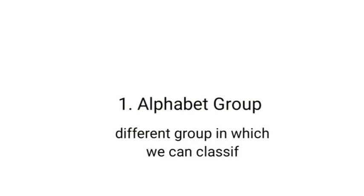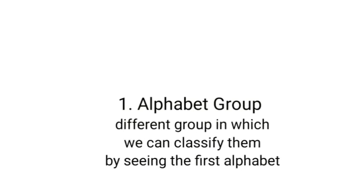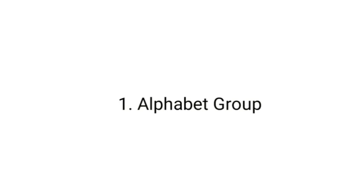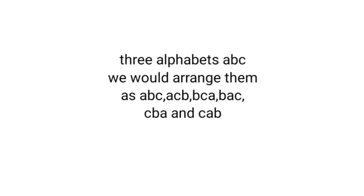An alphabet group is a group we can classify by looking at the first alphabet of a specific number of alphabets. For example, if we take three alphabets A, B, C, we would arrange them — and in this case, ABC and ACB can be classified as the A group, BCA and BAC can be classified as the B group.